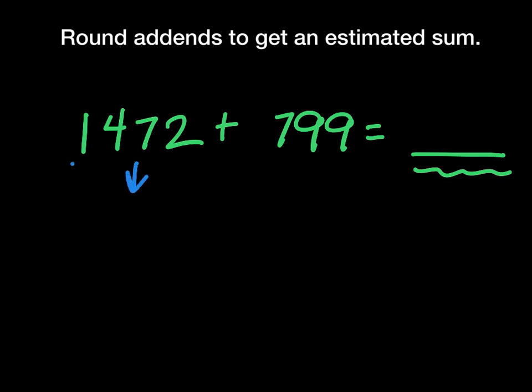So if I'm rounding to the nearest thousands place here, I'm gonna think about my number line and I'm gonna think about what is this number between. It's between 1,000 and 2,000, but it's closer to 1,000.